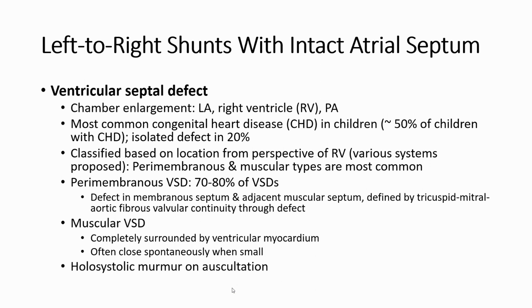VSD is the most common congenital heart disease in children, up to 50 percent, and as an isolated defect only in 20 percent. We classify VSD based on location from the perspective of the right ventricle. The perimembranous and muscular types are the most common; perimembranous VSD accounts for up to 70 to 80 percent of all VSD cases.